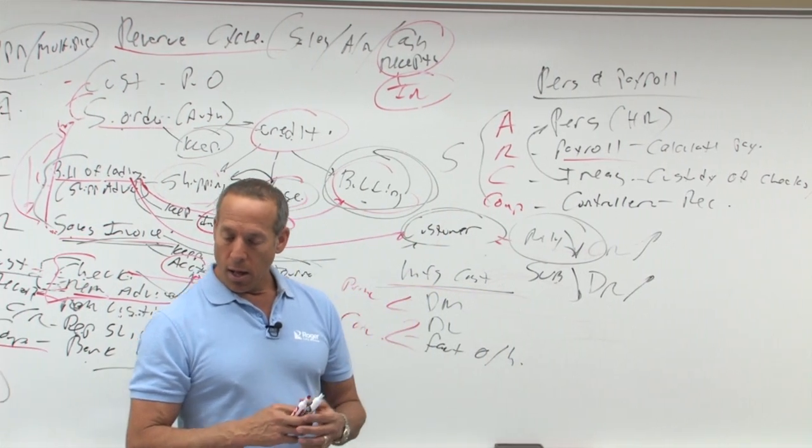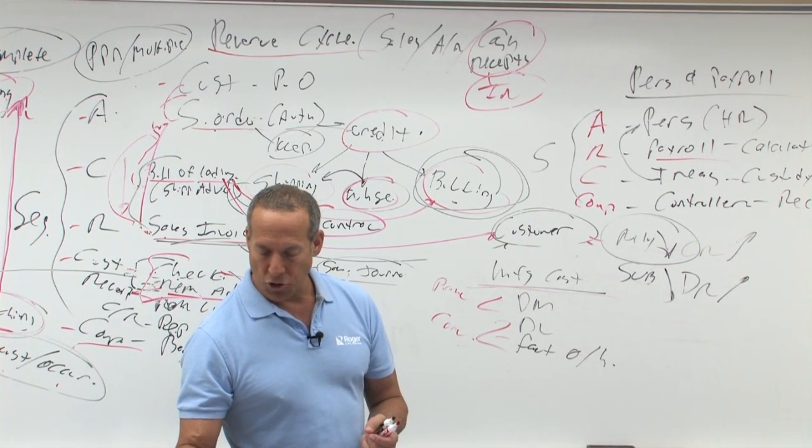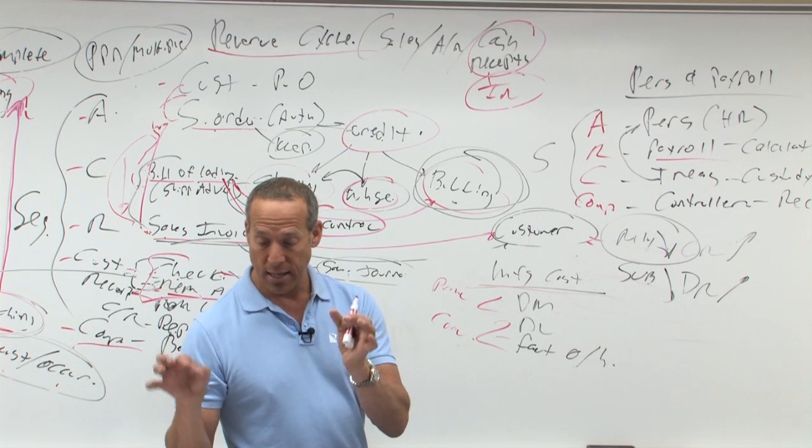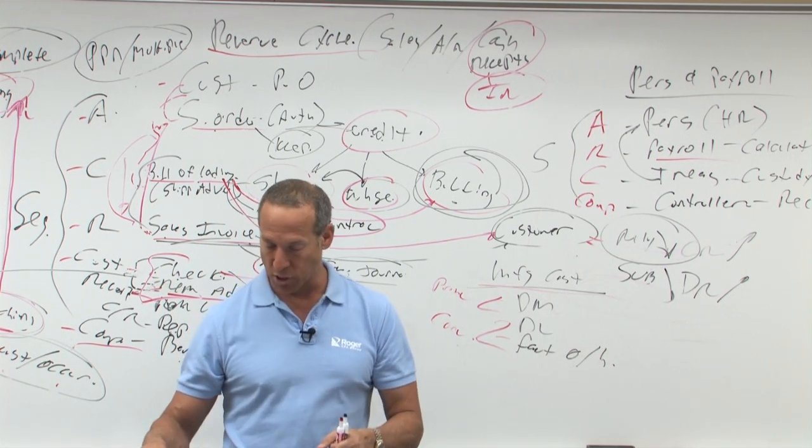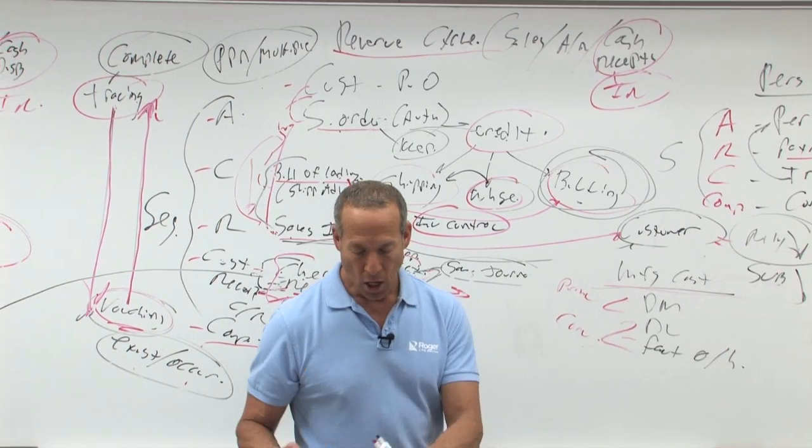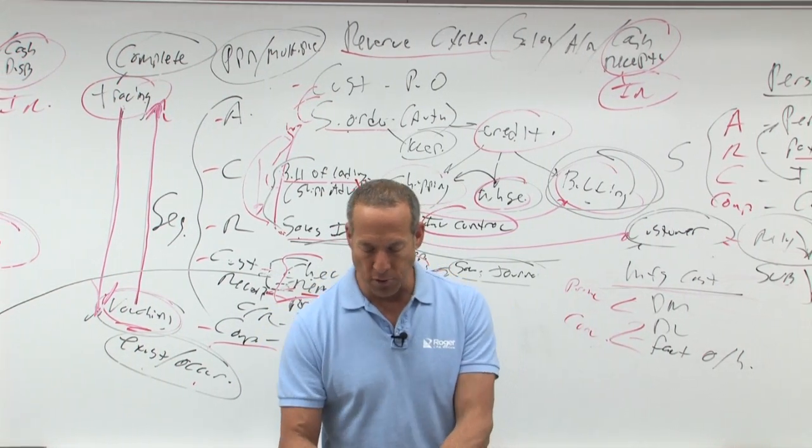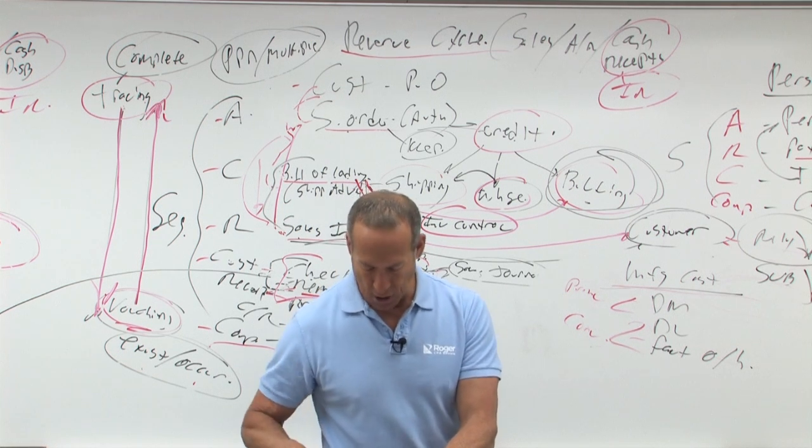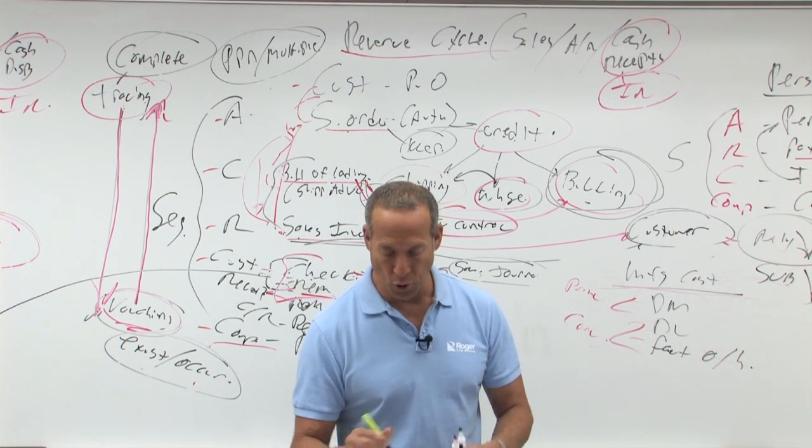An auditor will most likely assess control risk at a high level. That means if the payroll department supervisor is responsible for what? So, what should they not do? This is bad. Examine the authorization forms for new employees. What should payroll do? What should they not do?